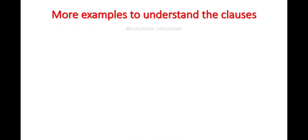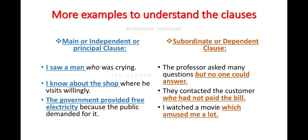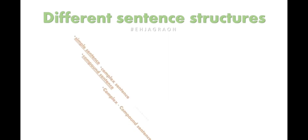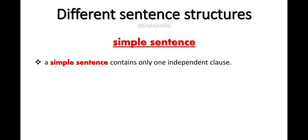Some examples have been given where the blue color indicates the principal or main clause and the subordinate clause is marked separately. We are doing clauses so that sentence structure will be easy to understand. There are different types of sentences: simple, compound, complex, and compound-complex. A simple sentence contains only one independent clause.